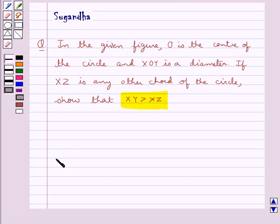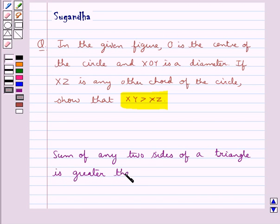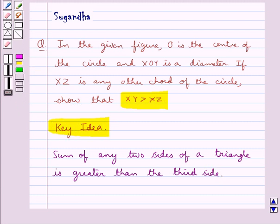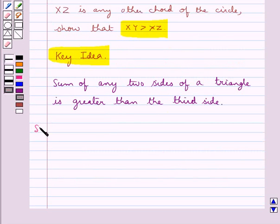Before we move on to the solution, we should know that sum of any two sides of a triangle is greater than the third side. This is the key idea to be used in this question. Now, we move on to the solution.